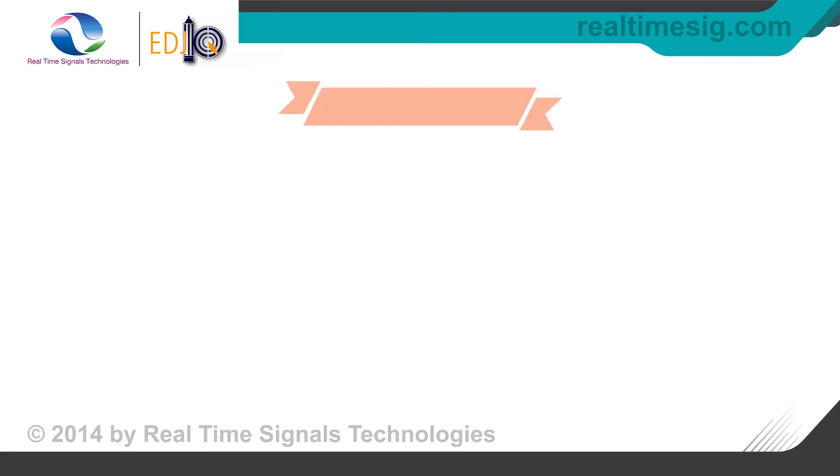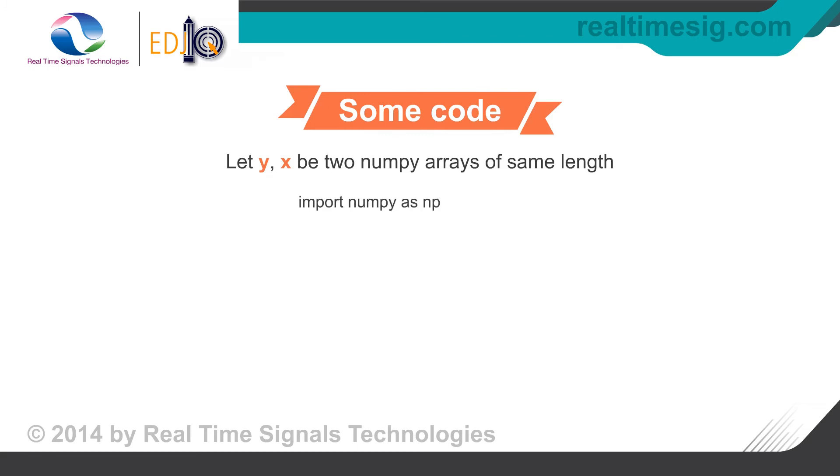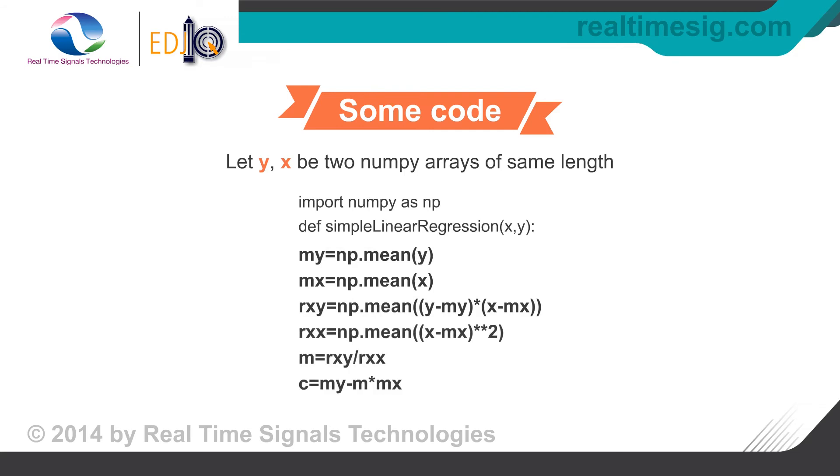Here is a python code snippet detailing the steps involved in linear regression estimation. First the averages of x and y are computed. Then covariance and variance are computed, which are divided to get the value of m. The value of m is then used to compute c.